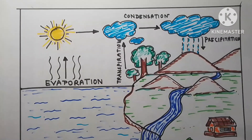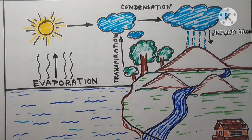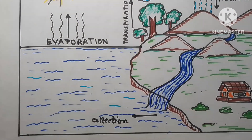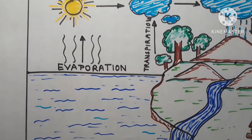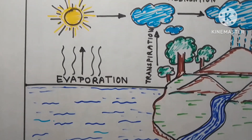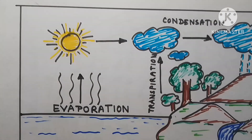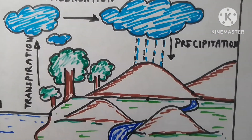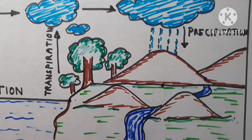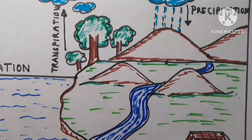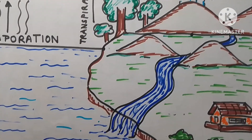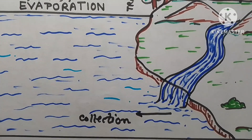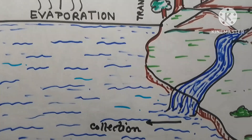Here is a neat diagram of the water cycle with proper labeling of all the steps. Due to the heat of the sun, evaporation happens — water evaporates from the oceans. Through transpiration from the green leaves of plants, water is also evaporated. Then condensation happens and cloud formation occurs, after which water is precipitated through rain and again collected at the sea.